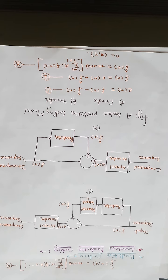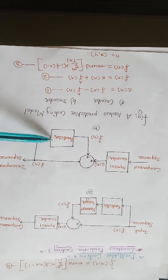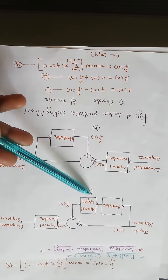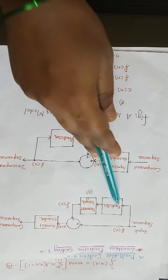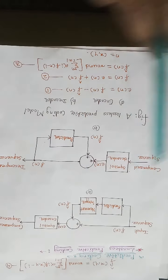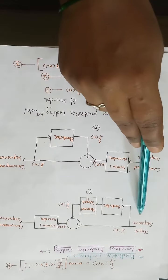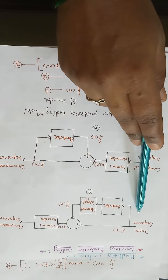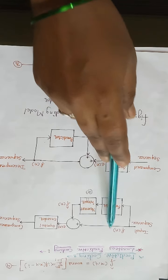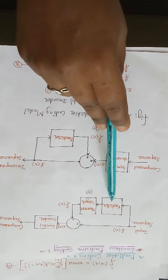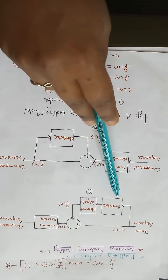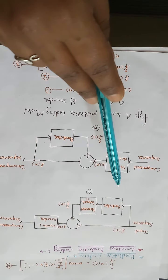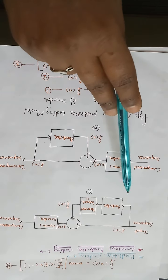We will see first the lossless predictive coding technique. The figure shows the lossless predictive coding technique model. A is the encoder and B is the decoder, each containing an identical predictor. Both will have the predictor. From the encoder, the input sequence is a discrete time input signal F of N, introduced to the encoder as well as to the predictor. The predictor generates the anticipated output value of each sample based on a specified number of past samples.